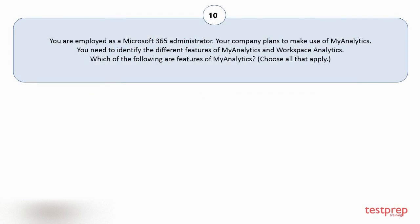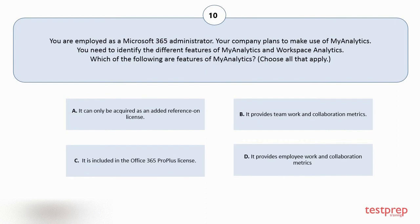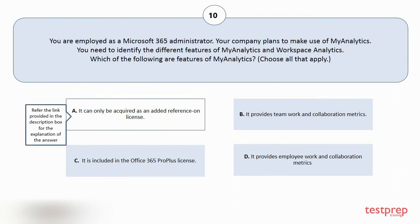Number ten. You are employed as a Microsoft 365 administrator. Your company plans to make use of MyAnalytics. You need to identify the different features of MyAnalytics and Workspace Analytics. Which of the following are features of MyAnalytics? Choose all that apply. Your options are: A. It can only be acquired as an added reference on license. B. It provides teamwork and collaboration metrics. C. It is included in the Office 365 Pro Plus license. D. It provides employee work and collaboration metrics. The correct answer is option A.